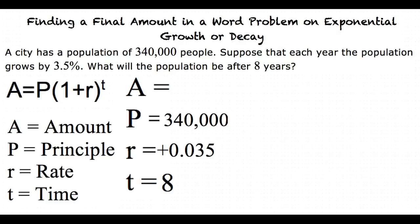Now that we have our numbers for our variables, we can substitute them into our A is equal to P times 1 plus r to the t power equation.